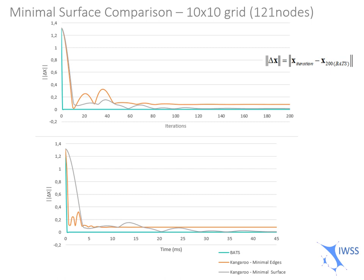To define the parameters for the benchmark, we will assume that if we define 200 iterations in BATS, we will reach a minimal surface. We compare this geometry with all other geometries on all methods and all iterations. You could retrieve these graphs from the iterations and by time. As you can see here, the BATS and the minimal surface procedure in Kangaroo converge to the same solution, which was what we expected. The minimal edges don't, because it is an approximate solution and obviously it will not converge to the exact solution.